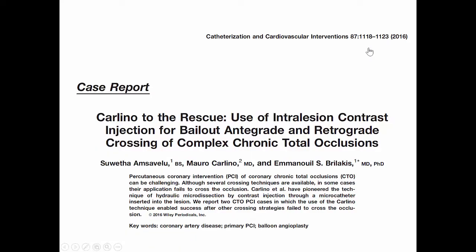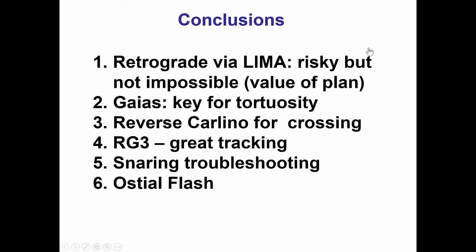This case has been published in CCI where you can refer for more details. It provides several important lessons. The first is that retrograde via the LIMA is a risky procedure and should be done with a lot of care and thought, and potentially with prophylactic use of hemodynamic support. However, in cases like this one where there is no other option and the patient is severely symptomatic, it can be used as a route taking all available precautions.